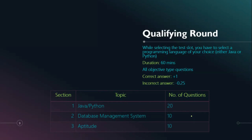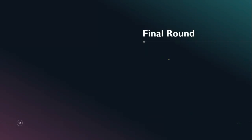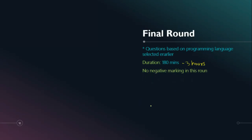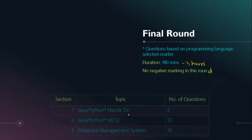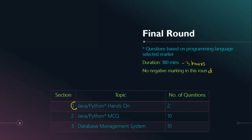After clearing the Qualifying Round — the cutoff is around 65-70% — you move to the Final Round. Questions here are based on the programming language you selected earlier. The duration is 180 minutes (3 hours) with no negative marking. Section 1 has two hands-on coding questions in your chosen language, Section 2 has 10 MCQs on your chosen language, and Section 3 has 10 in-depth database management questions.